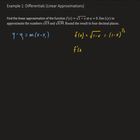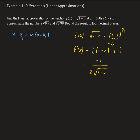From here we can take the derivative using the general power rule. So we're going to have one half times 1 minus x to the negative one half, times the derivative of the inside, which gives us negative 1. We can rewrite this as minus 1 over 2 times the square root of 1 minus x.